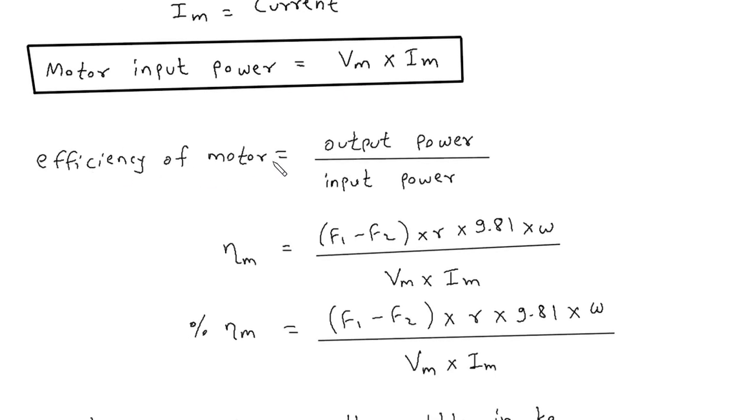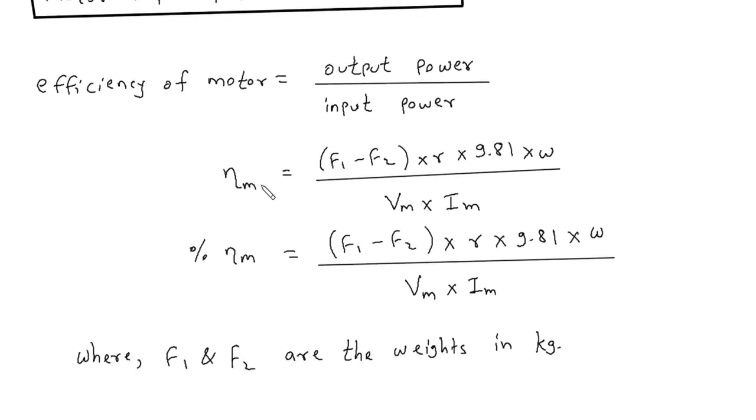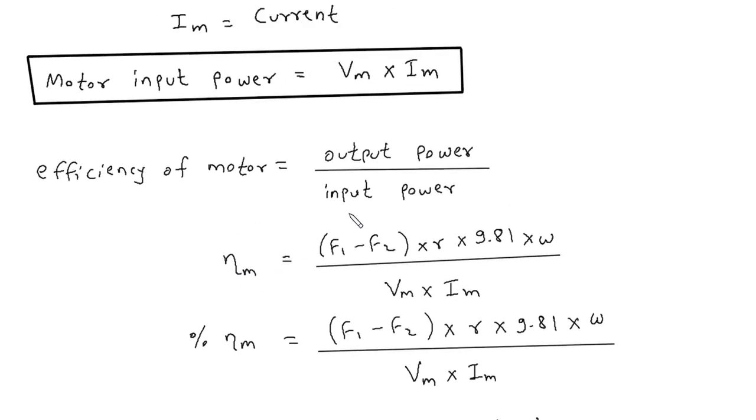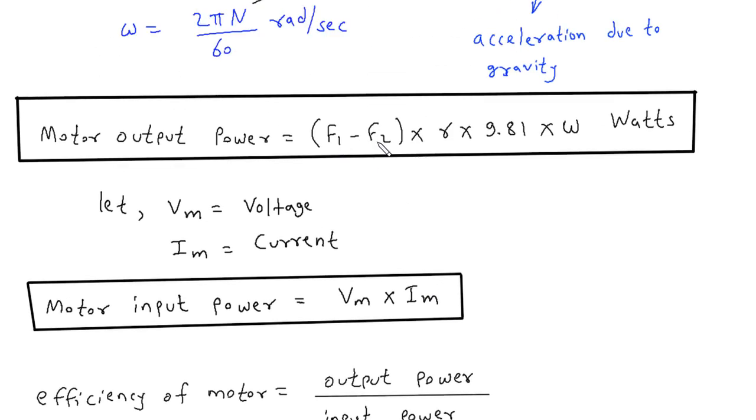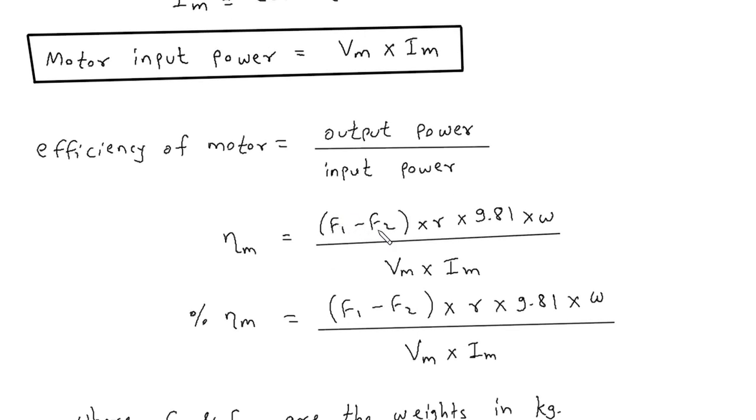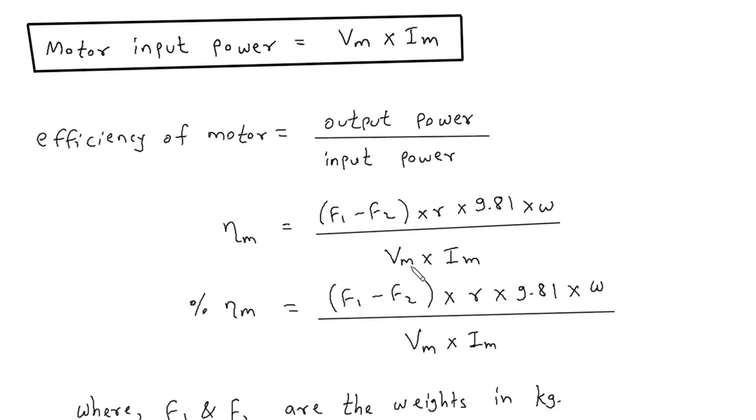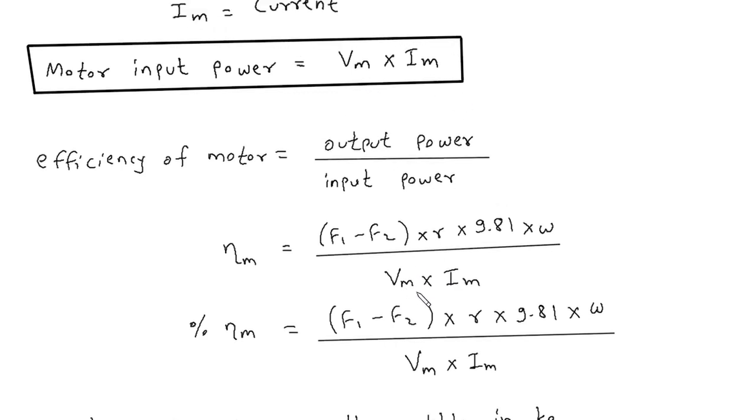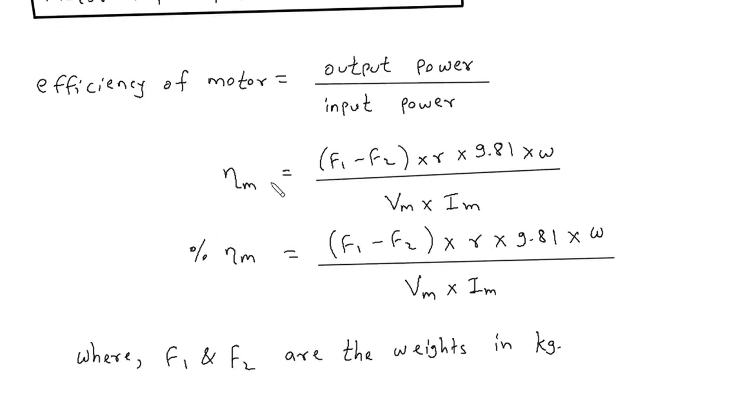Now efficiency of motor is equal to output upon input, output power upon input power. ηm is equal to, eta is for denoting efficiency, M is for motor. We know output power is (F1-F2) × R × 9.81 × ω. So (F1-F2) × R × 9.81 × ω upon input power is Vm × Im. If you want this efficiency in percentage, then we will just multiply it by 100.